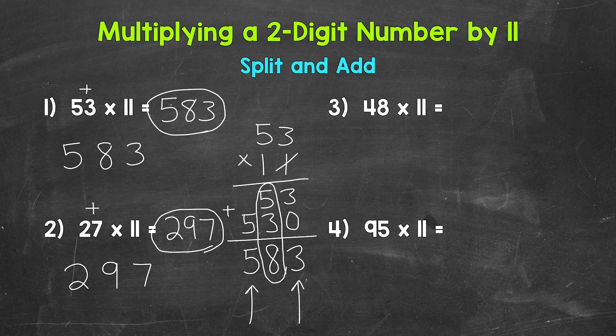Let's move on to number 3, where we have 48 times 11. So we need to split and add. But this one is going to be a little different because we need to carry. So split 48, and then add the digits. 4 plus 8 is 12. Don't put 12 in between. Put the 2 in between, and then carry the 1. So in the hundreds place, we have 1 plus 4, which is 5. And then we have the 2 and the 8. So 48 times 11 equals 528.